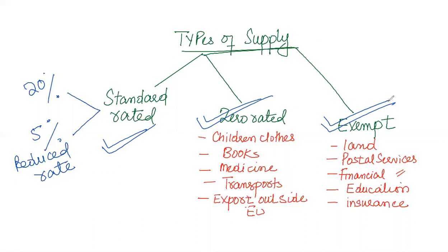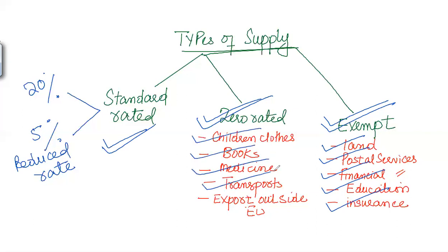Examples of exempt supply include land, postal services, financial services, education, and insurance. As far as zero rated supplies are concerned, these include children's clothing, books, medicine, transport, exports outside EU countries, and other items covered under that category. Anything else will be covered under standard rated goods, which will typically be provided in an exam question.